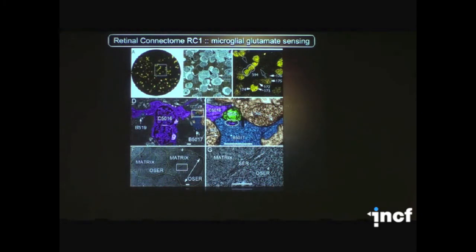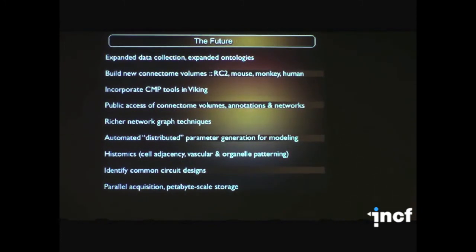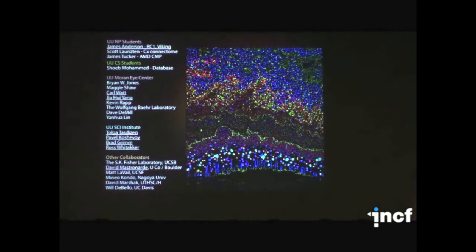I'll skip over the glial story just to get to the summary. One of the things we want to do, we wish to expand our data collection, build new connectome volumes, incorporate molecular tools into Viking. We already have public access active richer network graph techniques. We're using GraphViz right now. We overload it pretty fast, identify common circuit designs, and emphasize the point that these sorts of approaches are as good in liver and kidney as they are in brain and retina. And thank you for your attention.